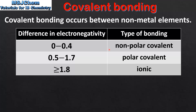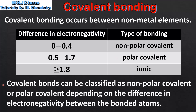If the difference in electronegativity is small we get a non-polar covalent bond, and if the difference in electronegativity is larger we get a polar covalent bond. So covalent bonds can be classified as non-polar or polar covalent bonds depending on the difference in electronegativity between the bonded atoms.